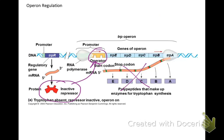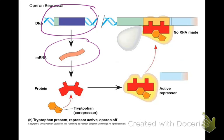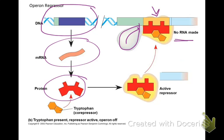RNA polymerase goes down the DNA and makes RNA, then RNA goes to the ribosome and makes the protein. But if the repressor is bound to the DNA, RNA polymerase can't go down — it's like a lego sitting on the DNA. When the lego is there, RNA polymerase won't go down, so nothing is made.